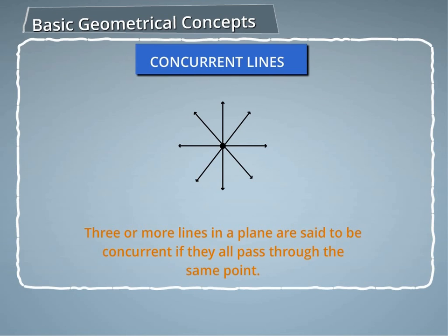In the given figure, the lines L, M, N, etc. all pass through a common point, O. Such lines are said to be concurrent lines and we say that they are concurrent at O. The point O is called the point of concurrency.